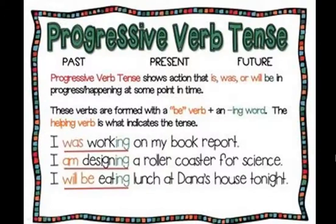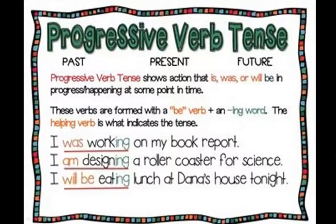Now the third example is: 'I will be eating lunch at Dana's house tonight.' This sentence belongs to the future progressive verb tense. The word 'eating' has the -ing added. Before 'eating', we have added the helping verb 'will be', which shows the future progressive verb tense.